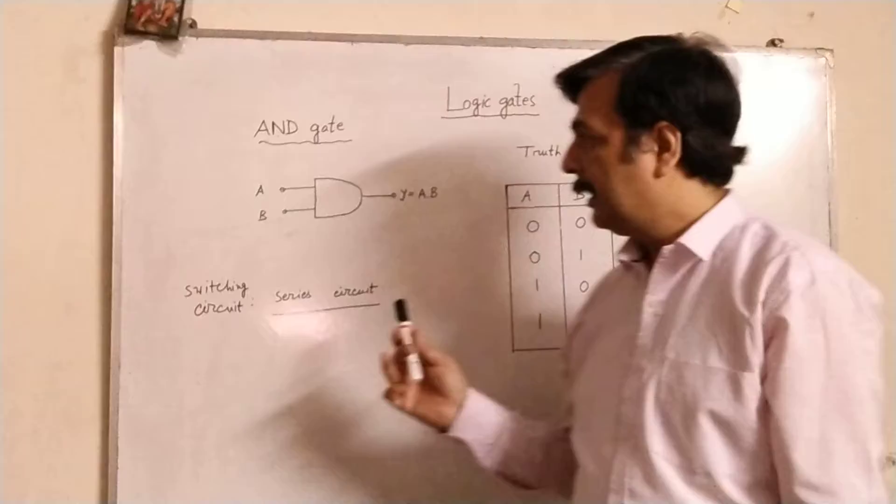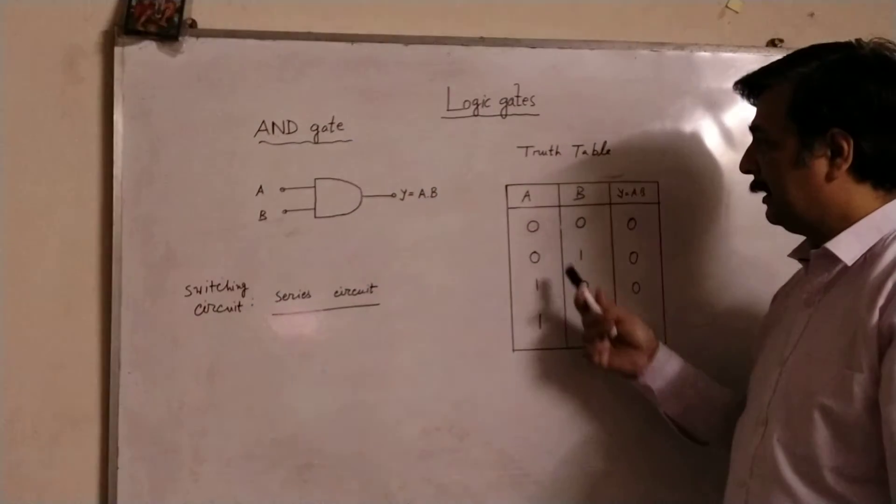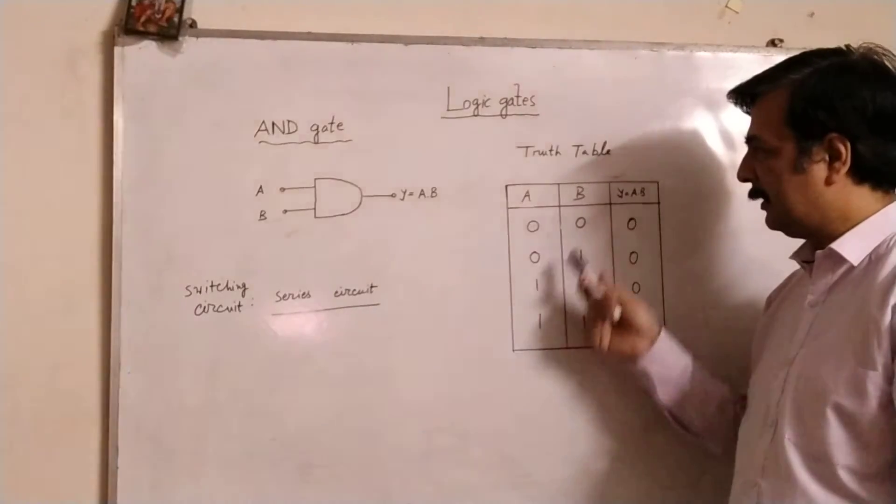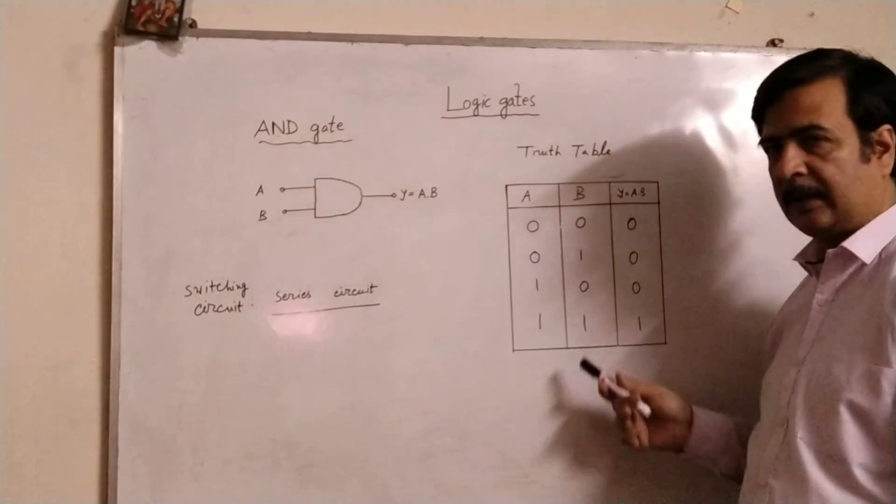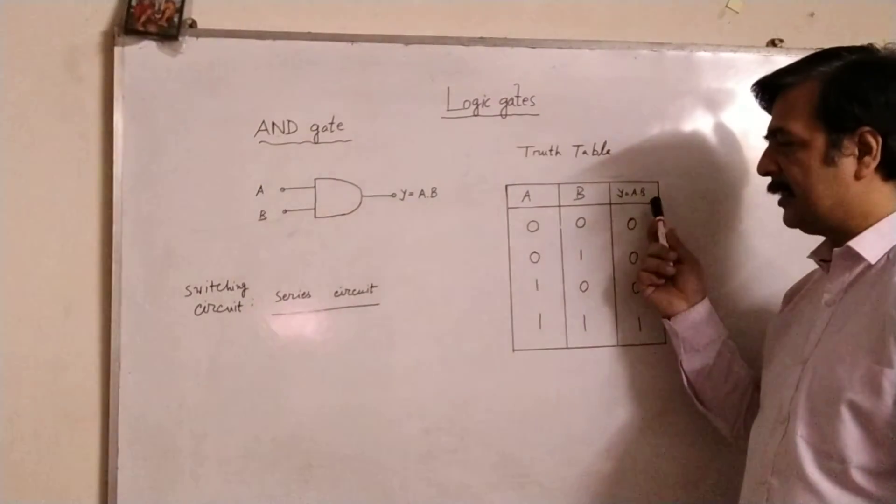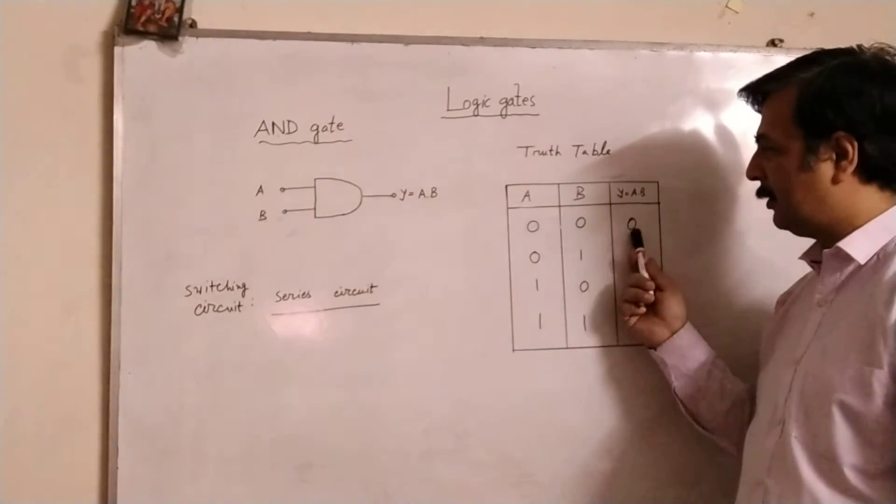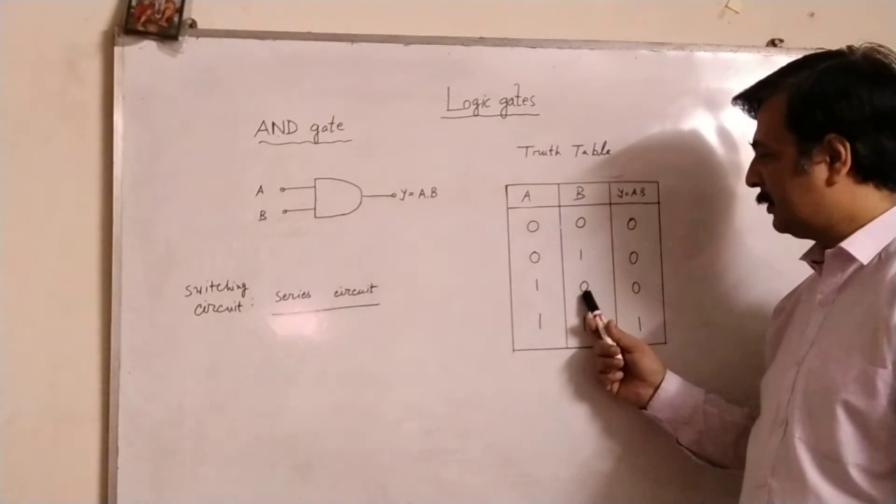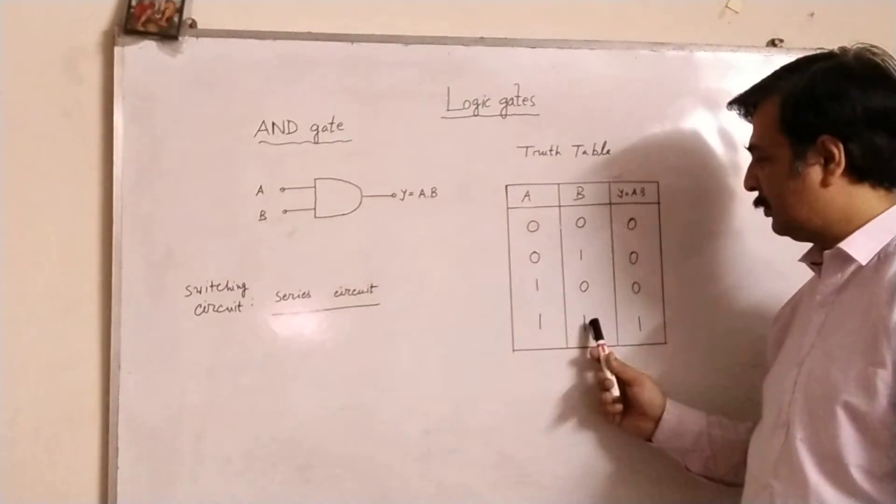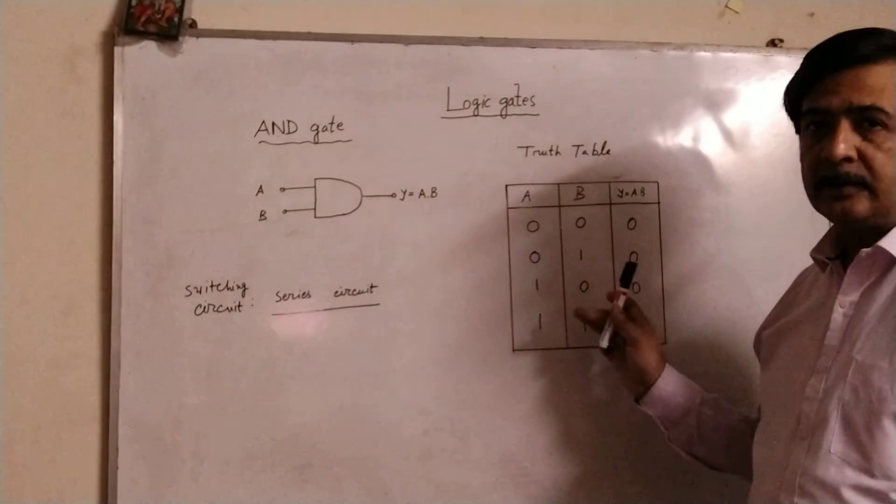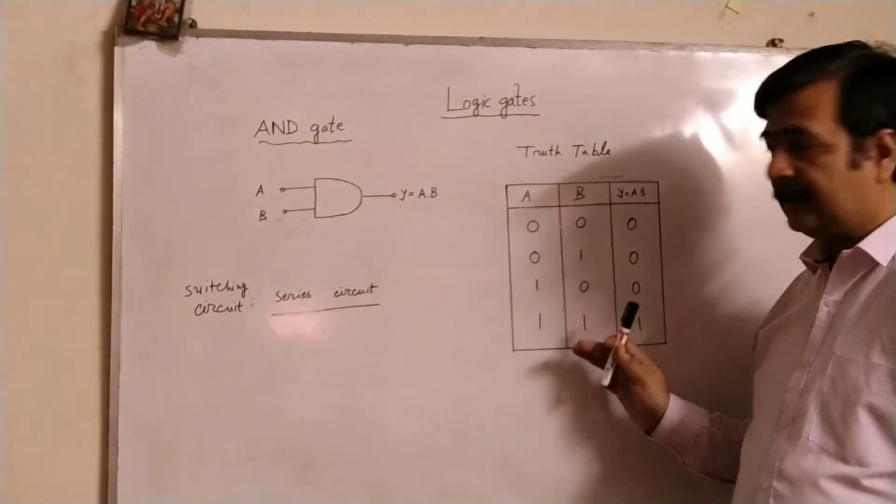And here in the truth table, I have chosen input A as 0, 0, 1, 1 and input B as 0, 1, 0, 1. Then when I am doing the product or multiplication, 0 into 0 is 0, 0 into 1 is 0, 1 into 0 is 0, and 1 into 1 is 1. But it follows the binary operation, it follows the multiplication rule of Boolean algebra.